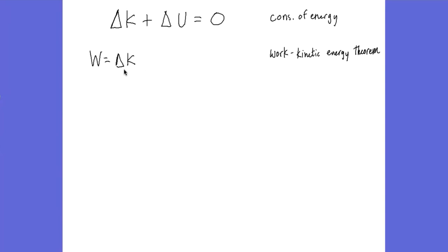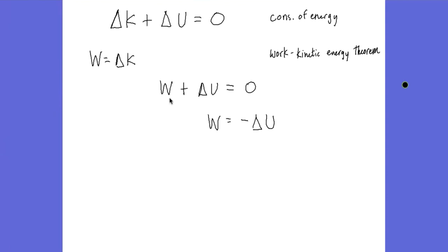Let's also look at the work-kinetic energy theorem, which says the net work done on an object is equal to the change in its kinetic energy. If we combine those two and replace delta K with its equivalent work, we get: work plus change in potential energy equals zero. Moving delta U to the other side gives us: work equals the opposite of the change in potential energy.